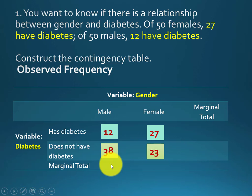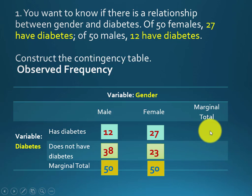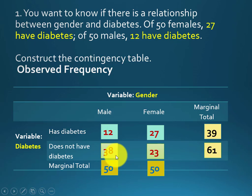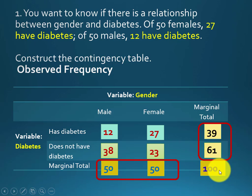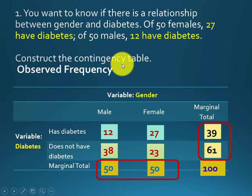We calculate the marginal totals: 12 and 38 give 50 for males; 27 and 23 give 50 for females. The row marginal totals are 39 (12+27) and 61 (38+23). The grand total is 100. These numbers represent the observed frequencies — the data collected from participants during data collection.